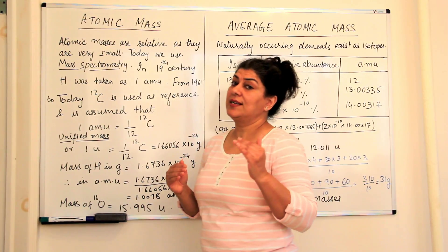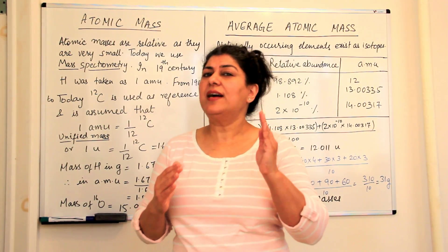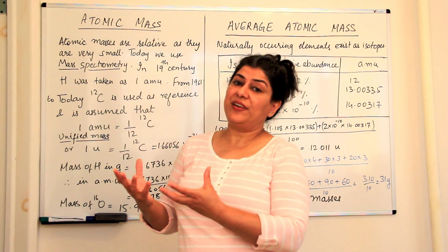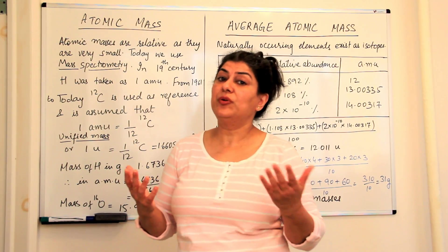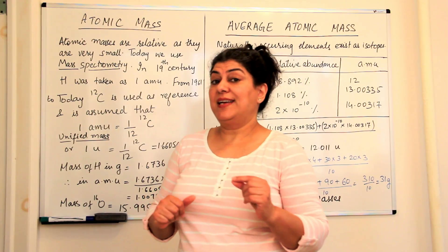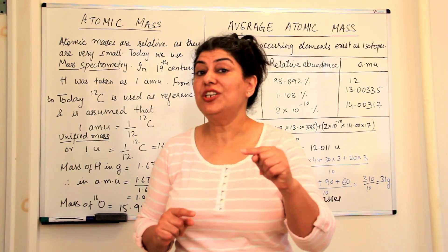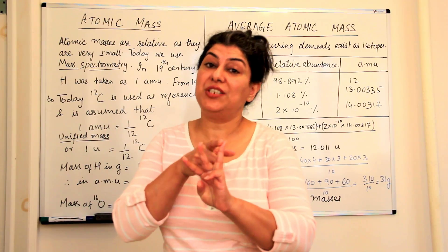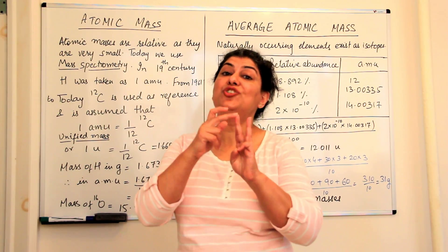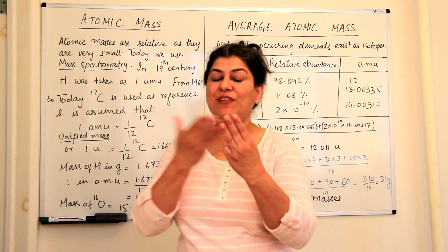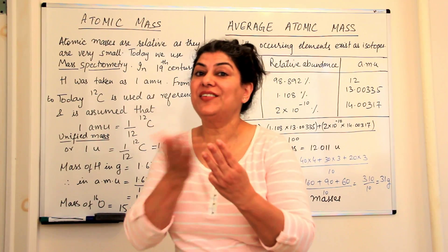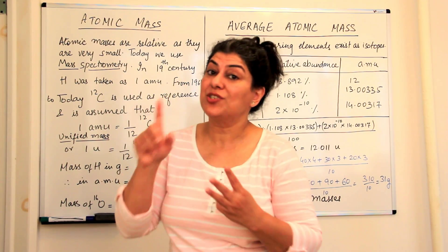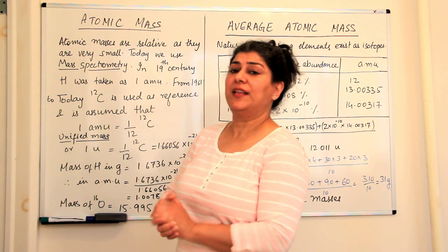But from 1961, scientists decided that hydrogen is a very unstable element and therefore using hydrogen as a reference is not a very good idea. Besides, hydrogen is present as three isotopes — protium, deuterium, and tritium — having masses of one, two, and three. So how do you ensure that the atom you got is ¹H₁, the protium? So they needed a better approach.